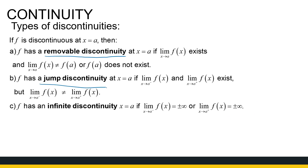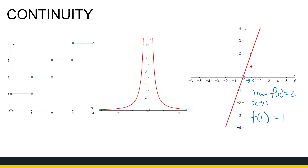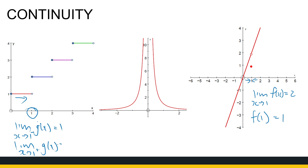The second type is a jump discontinuity — well named. Here the left-hand and right-hand limits both exist, but they're not equal to each other. For example, the limit as x approaches 1 from the negative side is 1, and from the positive side is 2. Since they're not equal, the overall limit as x approaches 1 doesn't exist, so the function is not continuous at 1, and this is a jump discontinuity.